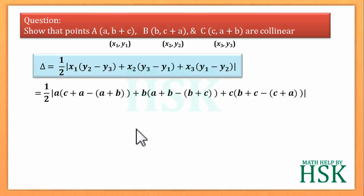The terms in the bracket which are highlighted will cancel out. So we get 1/2 times [a(c - b) + b(a - c) + c(b - a)].